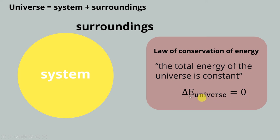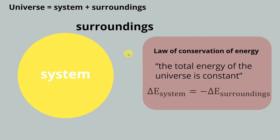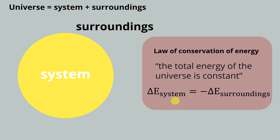Since the universe consists of system and surroundings, we can rewrite the equation as: the change of energy of the system equals the opposite change of energy in the surroundings. The sign of energy in this chapter is very important — we must define whether energy is in or out. If energy comes in, what is the sign? If energy goes out, what is the sign?